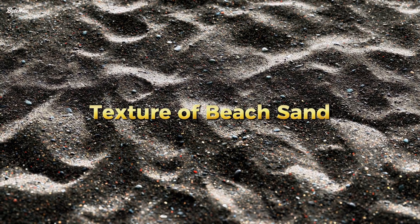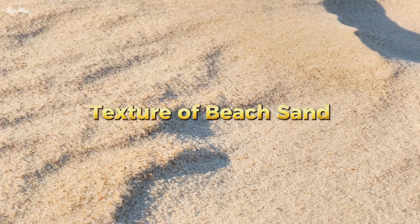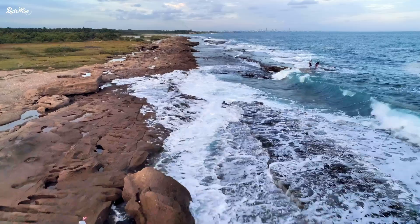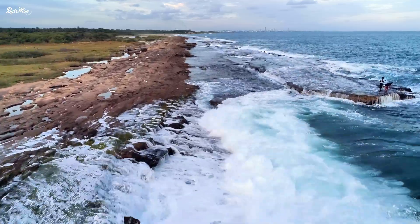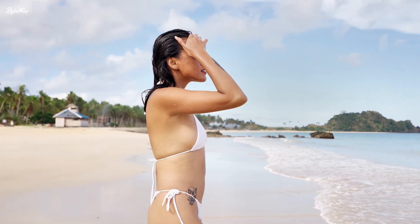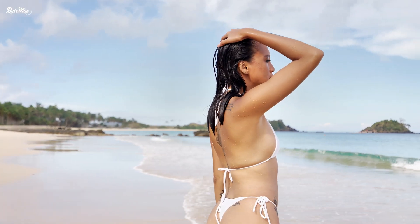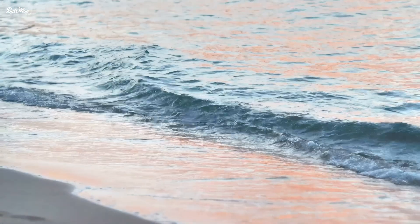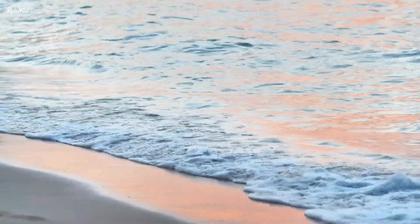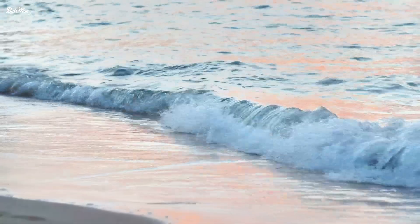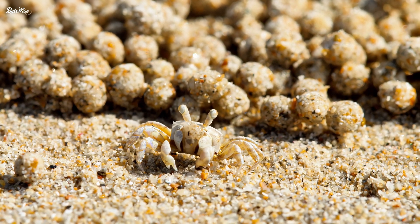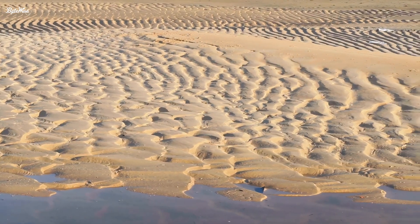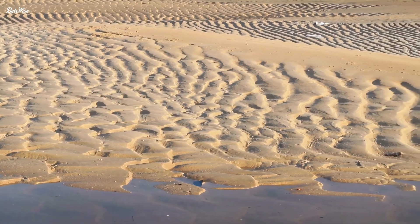The texture of beach sand also varies widely, influenced by local wave energy and tidal range. On beaches with strong waves, sand tends to be coarser, as the powerful water action carries away finer particles. Conversely, in sheltered areas, sand can be very fine and soft, a testament to gentler environmental conditions. Beyond its beauty and variety, beach sand plays a crucial role in coastal ecosystems — acting as a habitat for numerous creatures, from the microscopic organisms that colour some sands pink, to crabs and turtles that rely on beaches for nesting. Sand also serves as a natural buffer, protecting inland areas from storm surges and the erosive power of the ocean.